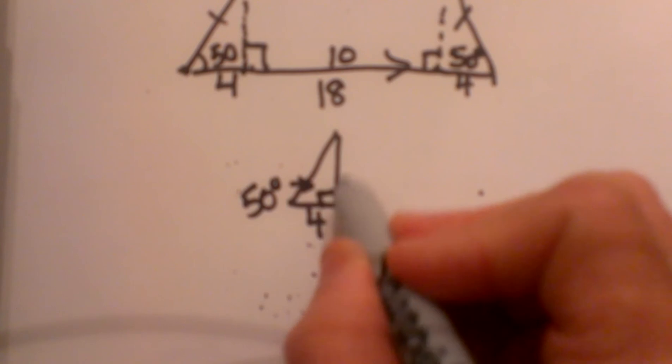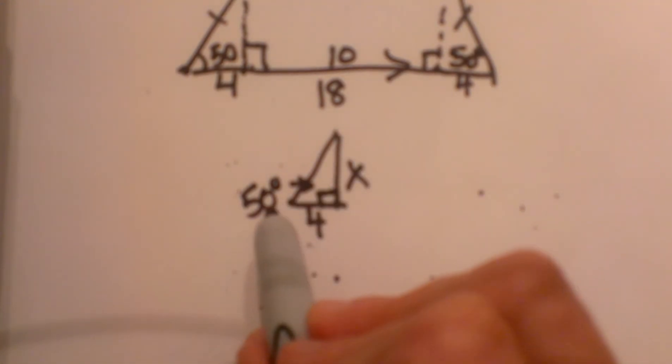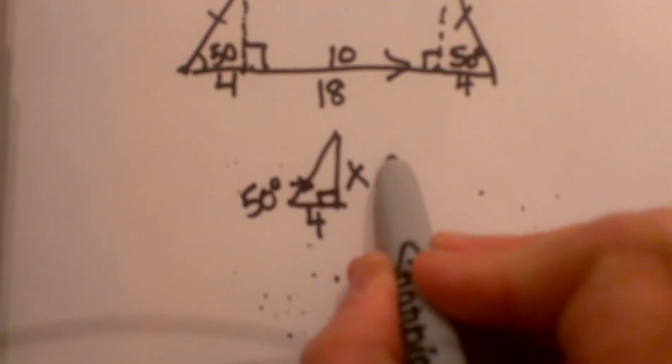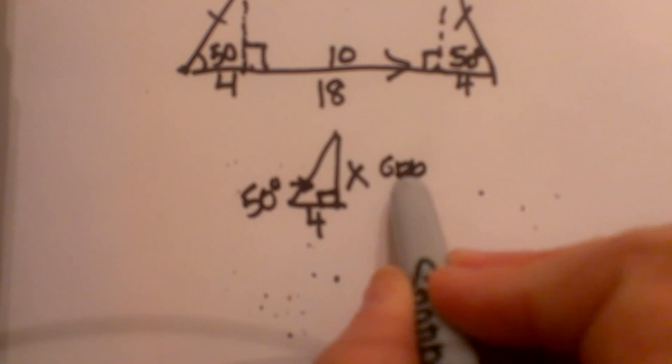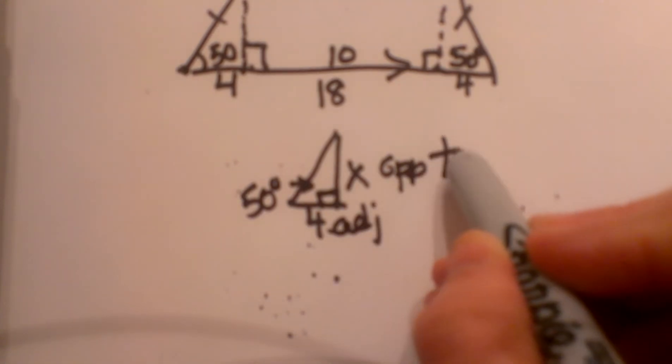Now I need to find the height. So I am going to call that x. Now using our trig ratios we know that that one is opposite and this one is adjacent, so I am going to label that opposite and this one adjacent. And opposite adjacent is the tangent function.